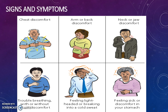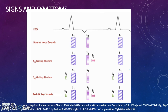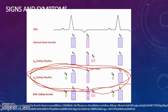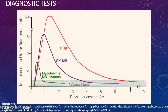Signs and symptoms include chest discomfort, arm or back discomfort, neck or jaw discomfort, trouble breathing with or without chest discomfort, feeling lightheaded or breaking into a cold sweat, syncope, or feeling sick. Other signs include an S4 gallop rhythm, which is blood flow into a stiff ventricle. Diagnostic tests include troponins, which are elevated relatively soon after MI but take days to decrease. The older, less sensitive CKMB can be used if the person had a heart attack several days before, as CKMB decreases very rapidly and can help identify new onset events.